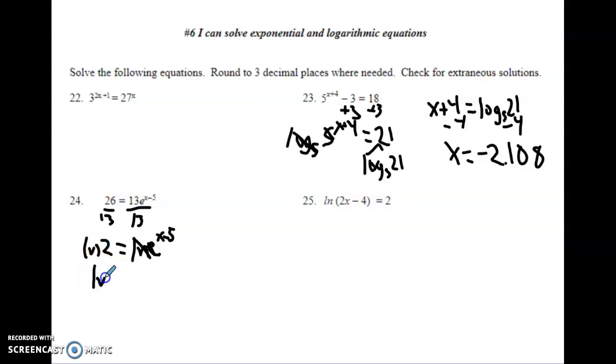So the natural log of 2 is equal to x minus 5, and to get the x alone, I'm going to add 5 to both sides, so I have natural log of 2 plus 5. Grab the calculator and do natural log of 2, close the parentheses, and then add the 5 to it. And we should get x equals 5.693.